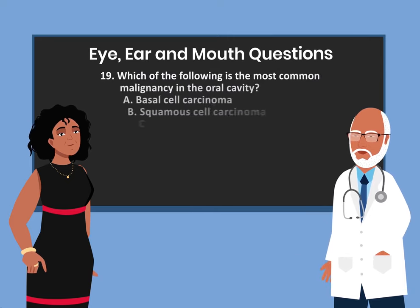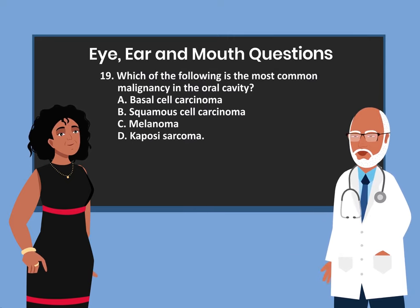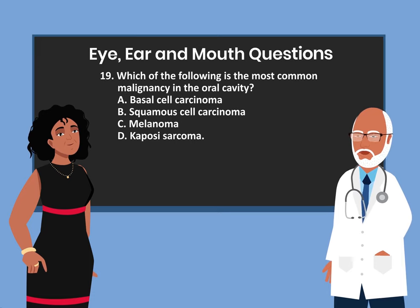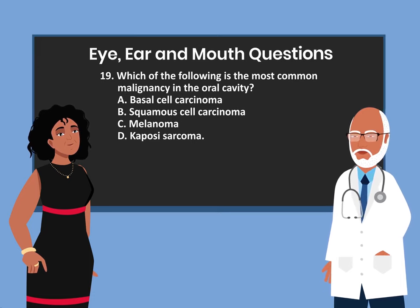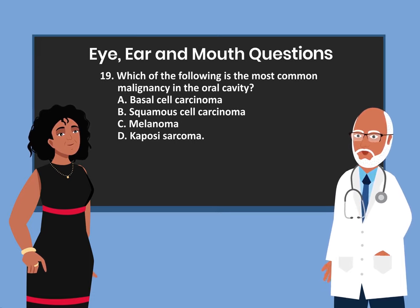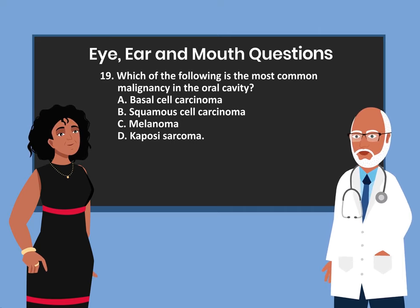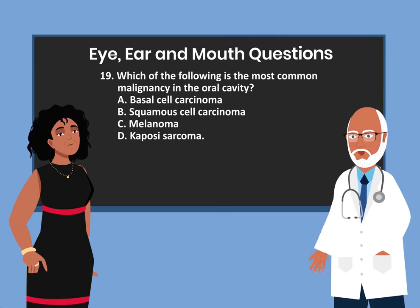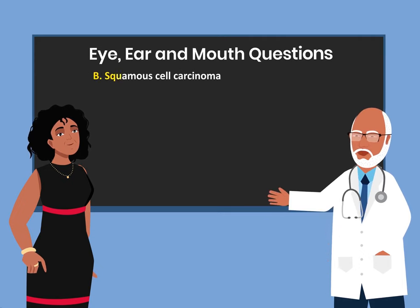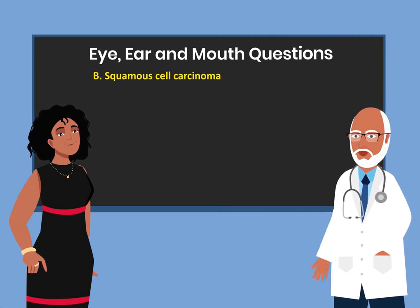Question 19. Which of the following is the most common malignancy in the oral cavity? A. Basal cell carcinoma. B. Squamous cell carcinoma. C. Melanoma. D. Kaposi sarcoma. The answer is B. Squamous cell carcinoma.